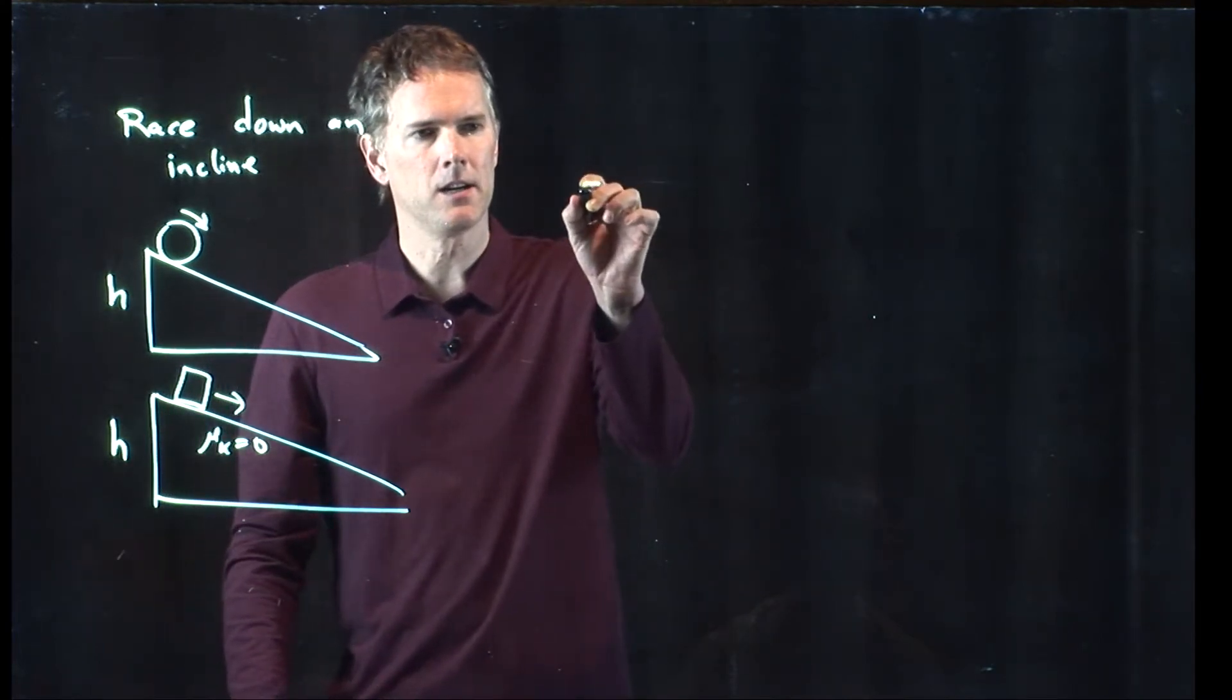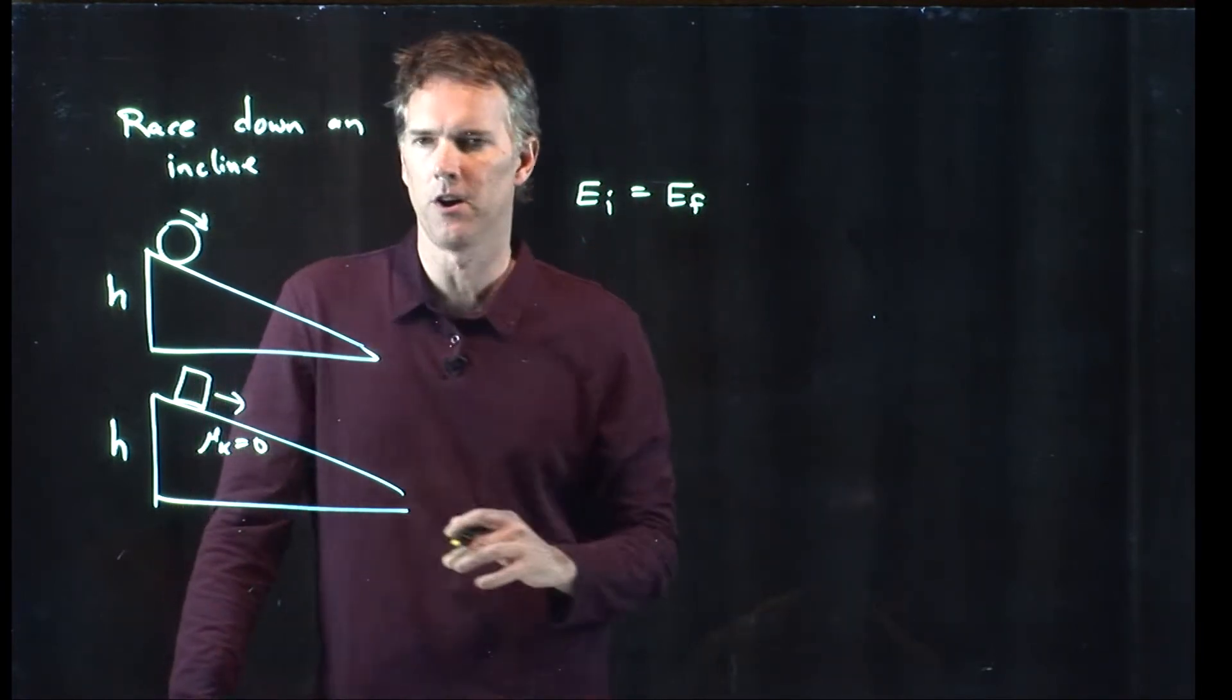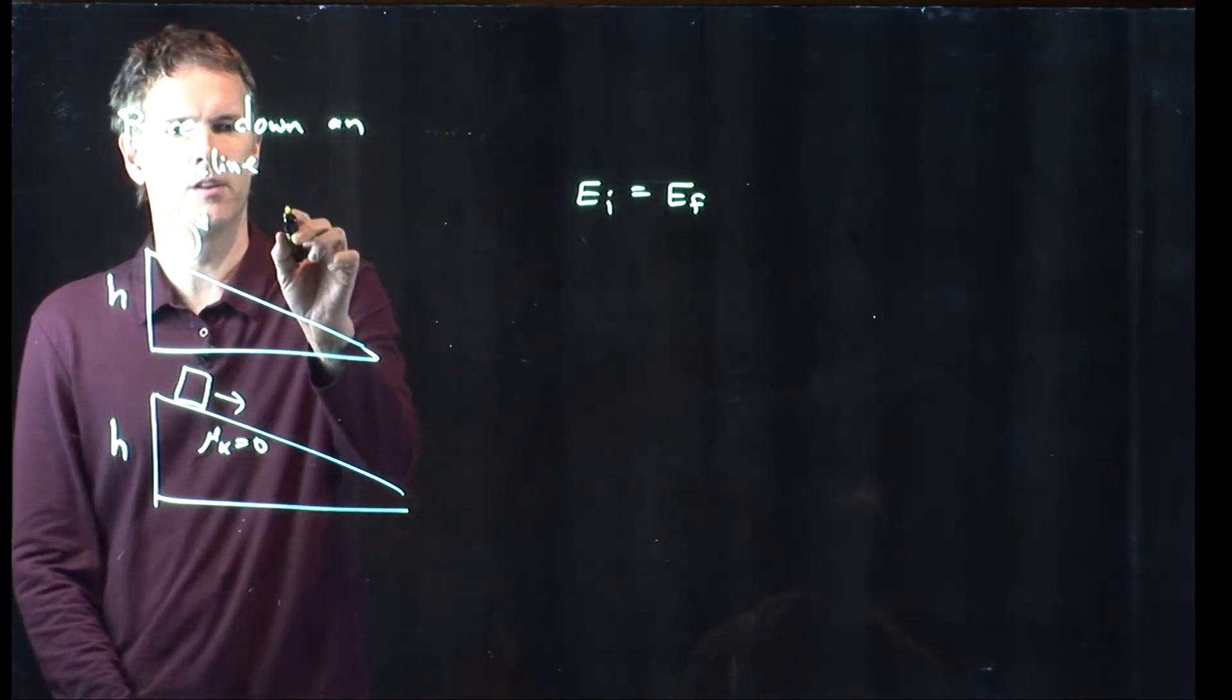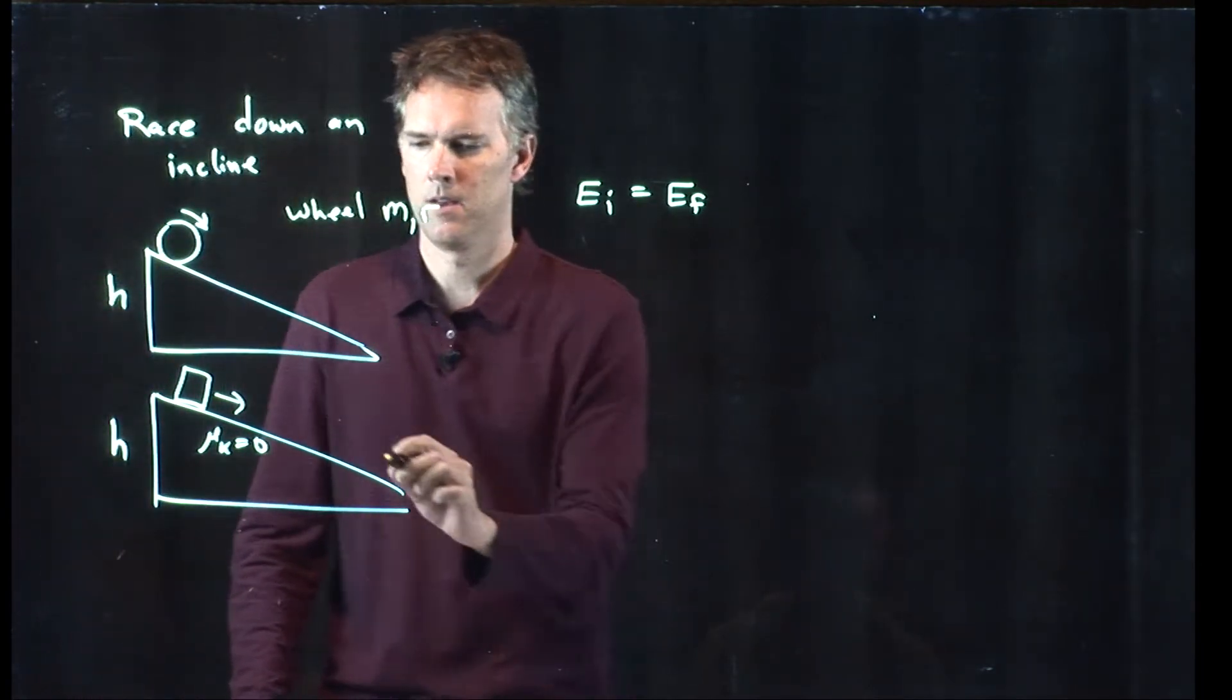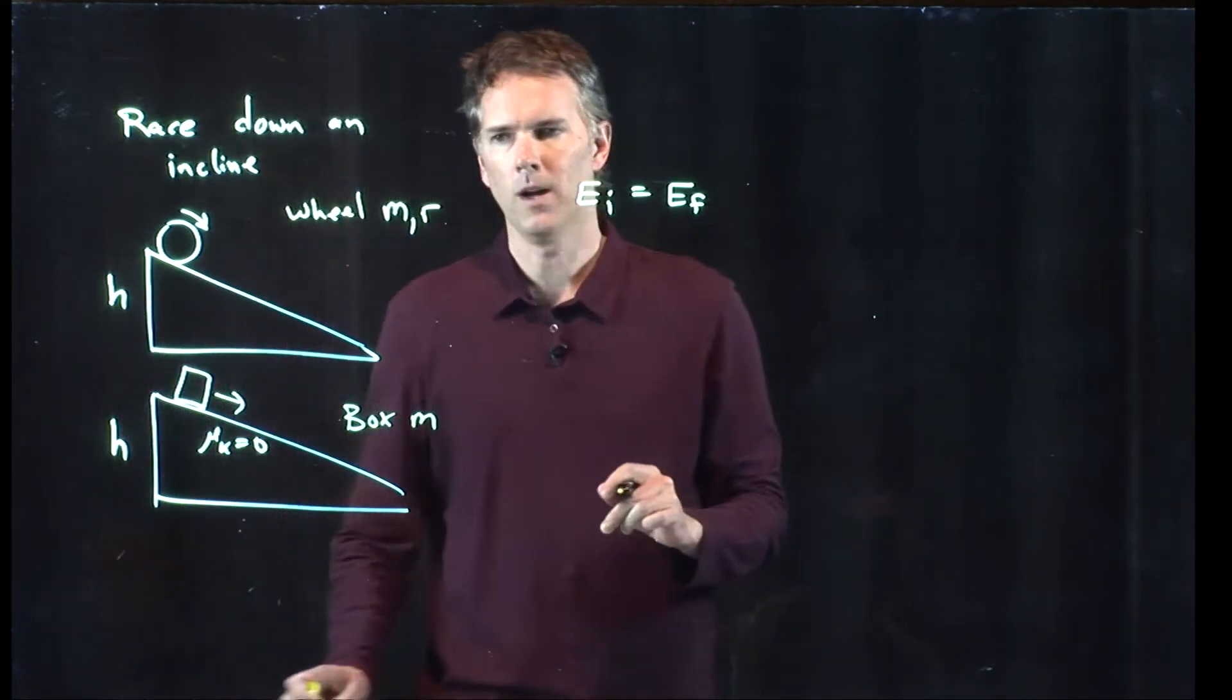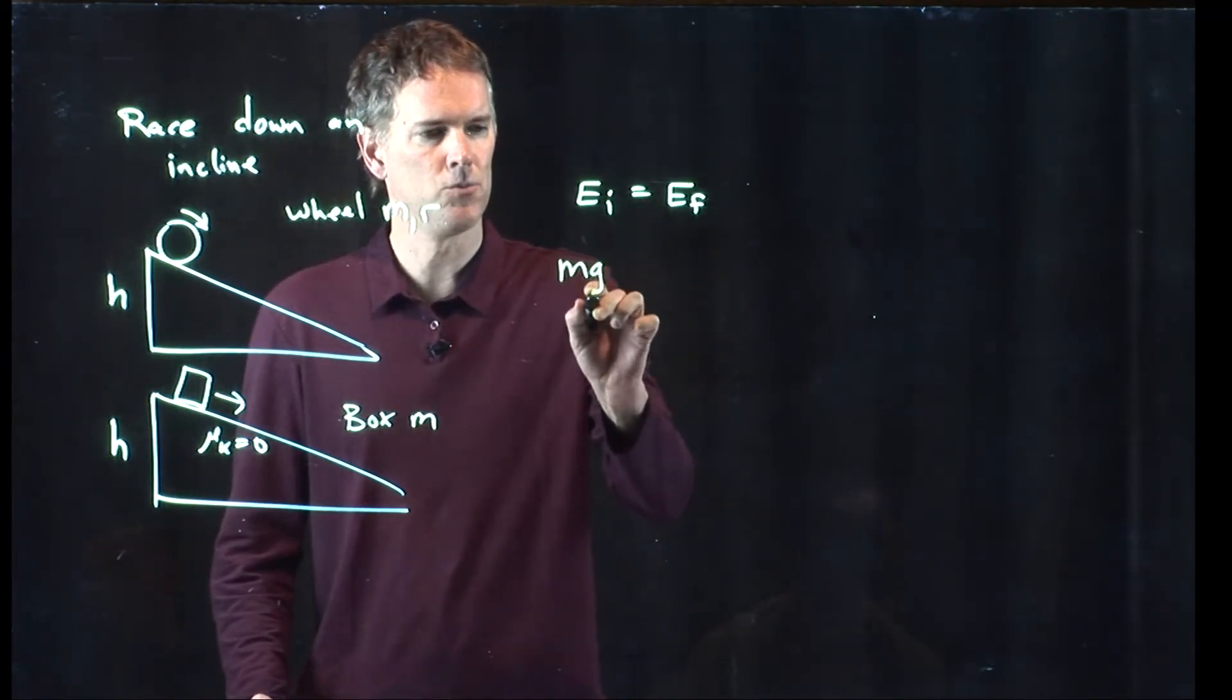Let's take a look at the idea of conservation of energy. When the wheel starts up there, and we're going to say that this thing has mass m, radius r, and the box has mass m, what can we say about the initial energy? When it's up at the top, it's all potential energy, mgh.